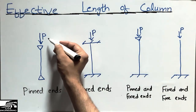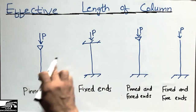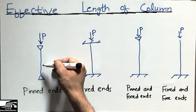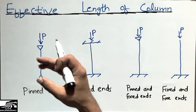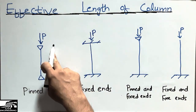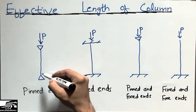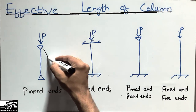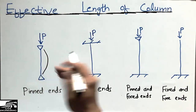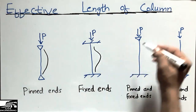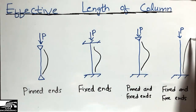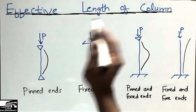Consider this is a column and the load P is acting on it along its axis. We consider this a long column because the effective length is always of the long column. Under this load, the column will deflect — it will buckle and move from its original position.